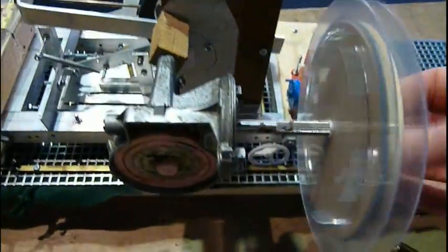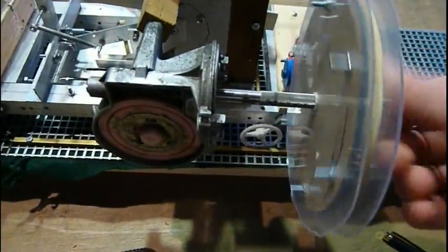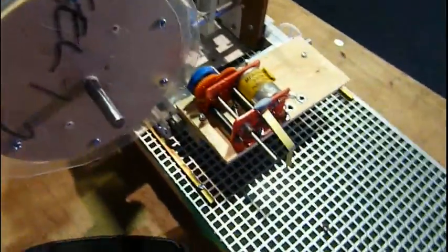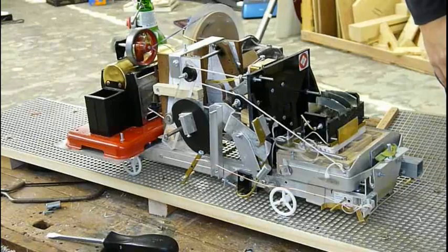Back here is an old windscreen wiper worm gear, and that provides a large reduction. And at the back, my only concession to electricity is a motor to run the machine for long periods. If you really dislike electricity, this machine runs fine from a steam engine, as I can show you in this earlier video.